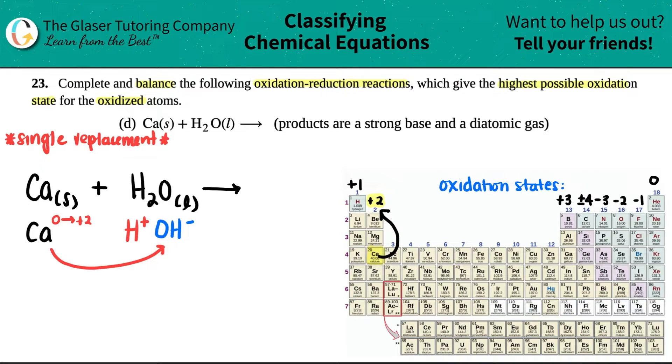Now I want to backtrack here. It says we need to give the highest possible oxidation state for the oxidized atom. Remember, the one that is being oxidized is always the one that is losing electrons, becoming more positive. That's what calcium is doing - calcium is going from a zero charge to a +2. This is the one that is being oxidized, and the +2 is the highest number in this case, so we're on the right track.